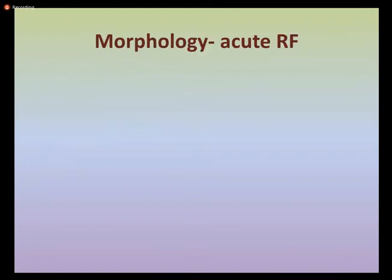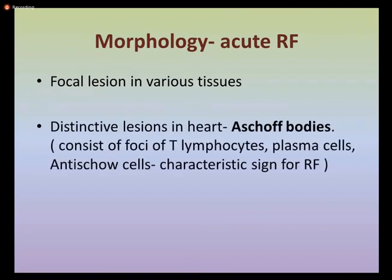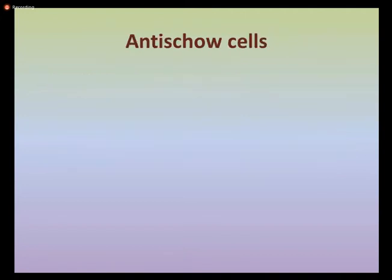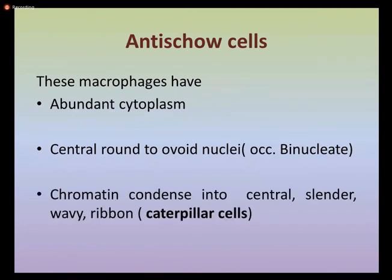In the morphology of acute rheumatic fever, focal lesions form in various tissues, including subcutaneous nodules. In the heart, distinctive Aschoff bodies form — foci of T lymphocytes, plasma cells, and Anitschkow cells. Anitschkow cells are macrophages with abundant cytoplasm, central owl-eye or wide nuclei (often binucleate), and chromatin condensed into a central wavy ribbon, making them look like caterpillar cells under the microscope.